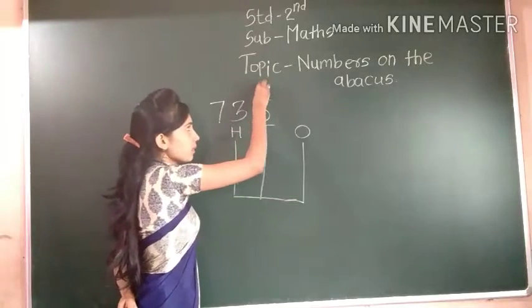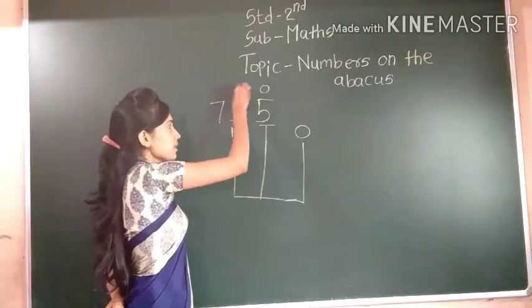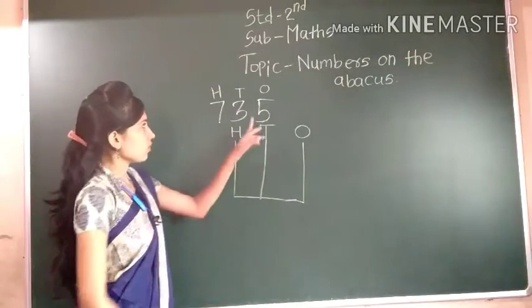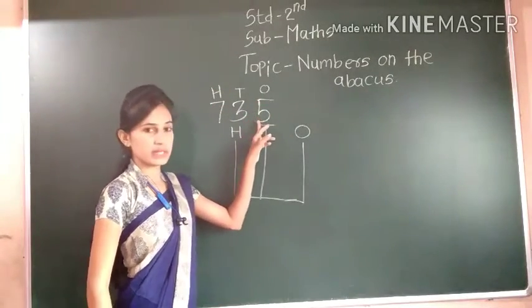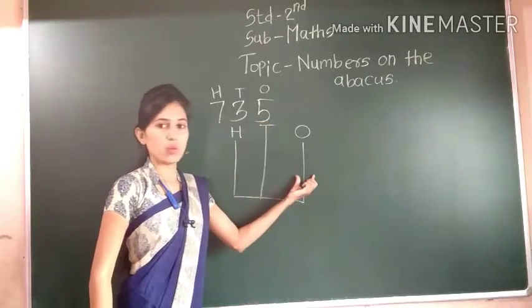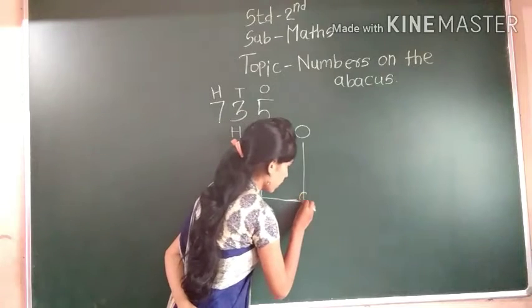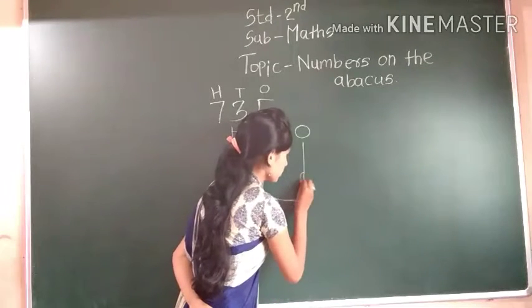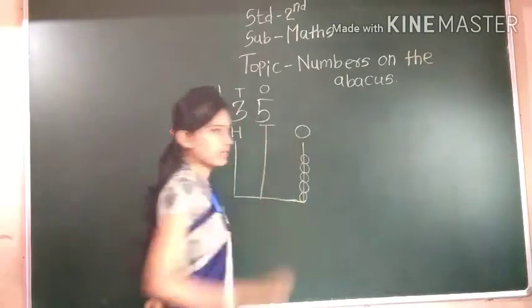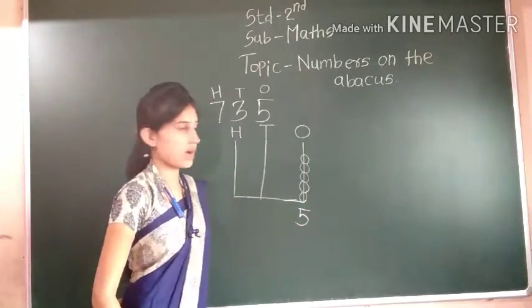5 is at the 1's place, 3 at 10's, and 7 at 100's. So 5 ones — we have to draw 5 beads at 1's place. Let's draw: 1, 2, 3, 4, 5 beads. And we write here 5 ones.